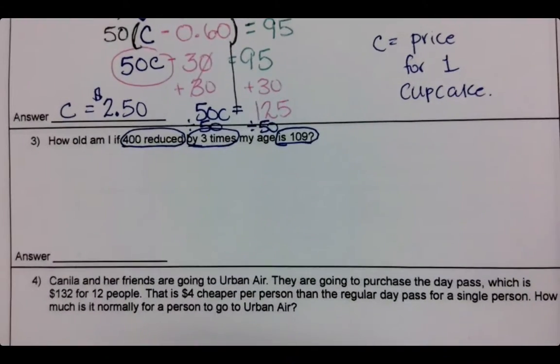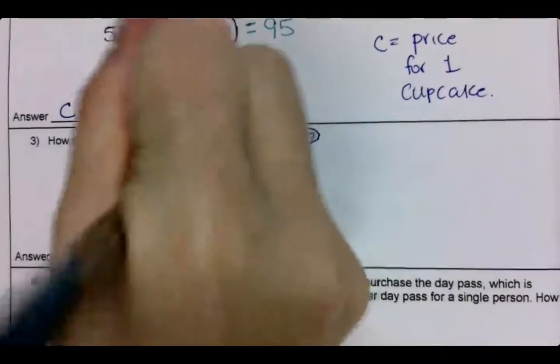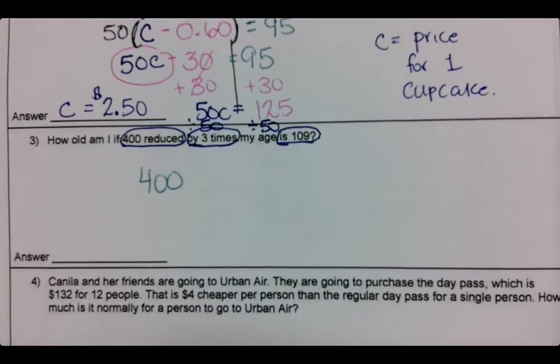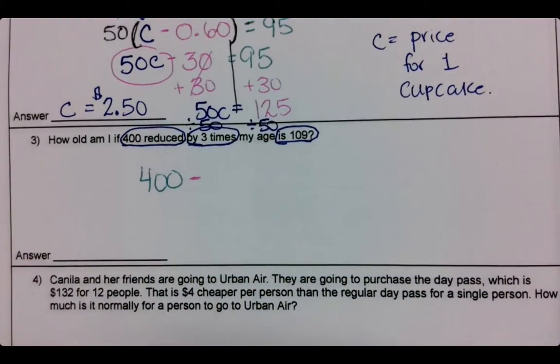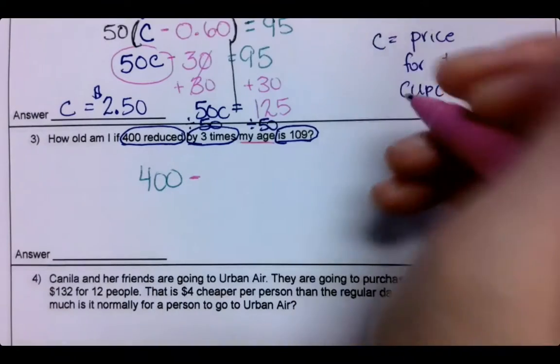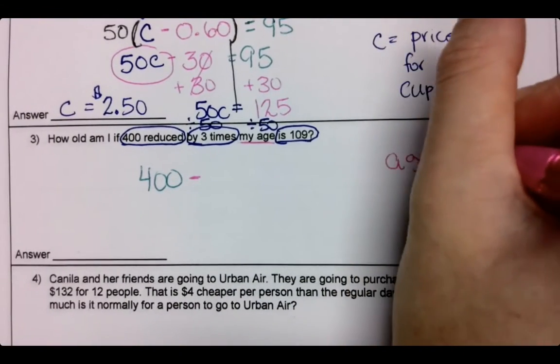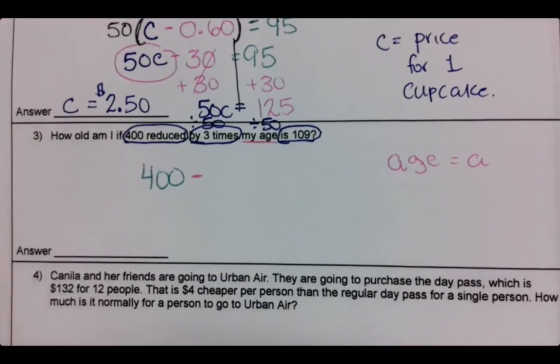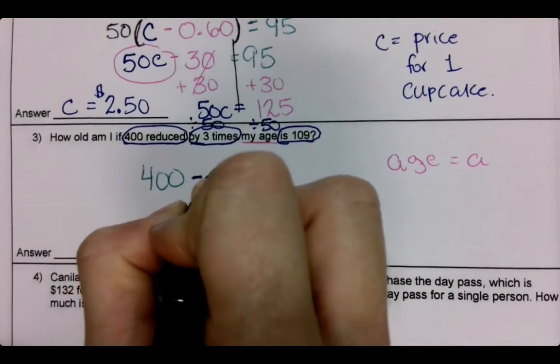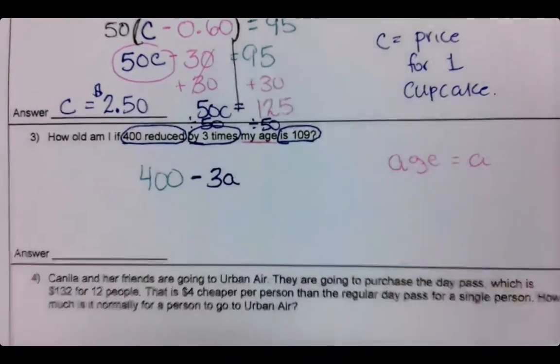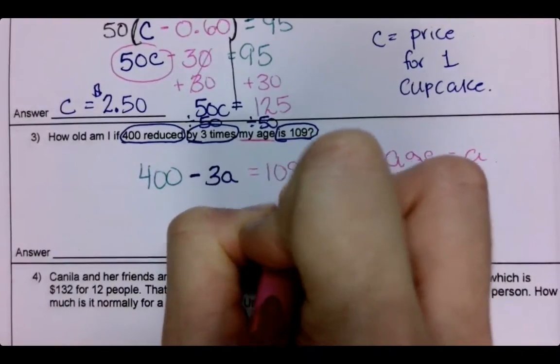So 400 reduced, what does reduced mean? Minus. Minus three times my age. So we're looking for age, right? So our variable is age. So we're going to do 400 minus three times my age is or equals 109.